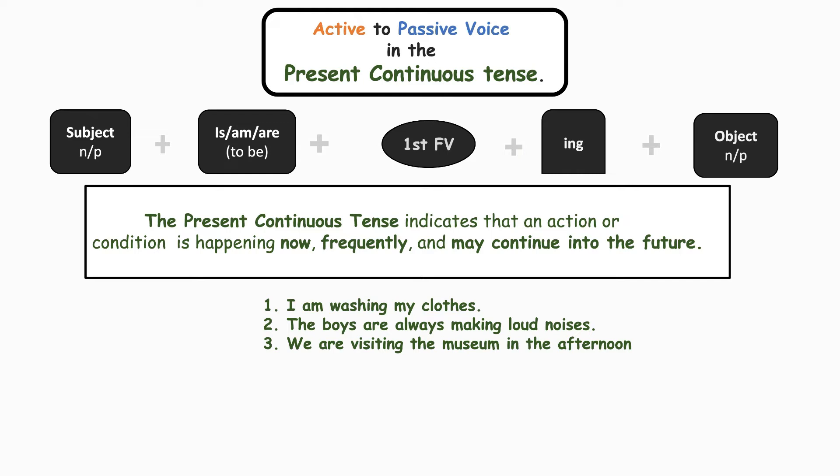Look at these sentences. Number one: 'I am washing my clothes.' The action is happening right now. Number two: 'The boys are always making loud noises' — they are frequently making noises. Number three: 'We are visiting the museum in the afternoon' — this has not yet happened; it will happen in the future. So continuous tense indicates actions happening now, frequently, and that may continue in the future.